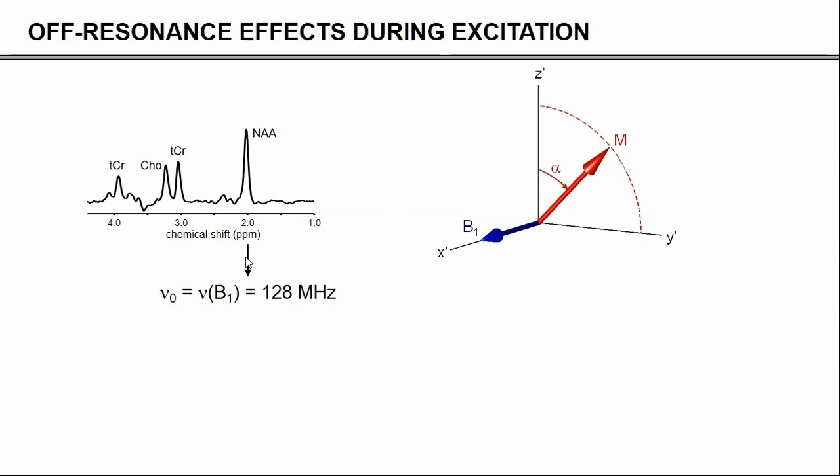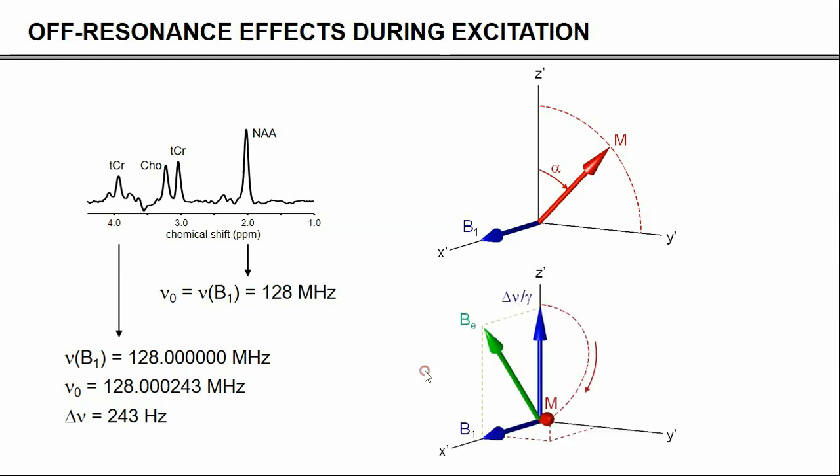If the NAA is on-resonant, that automatically means that the other signals are off-resonant. The frequency of the B1 field and the frequency of, for example, the creatine here at 4 ppm, they are not equal. There is a small difference, in this case, 243 Hz. So, in other words, the creatine signal is 243 Hz off-resonant. Now, that has as a consequence that there will be a small field vector along the z-axis equal to that 243 Hz.